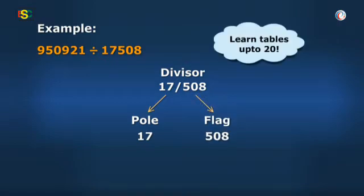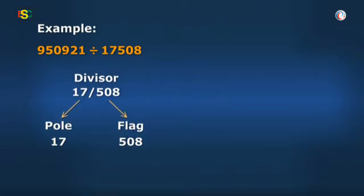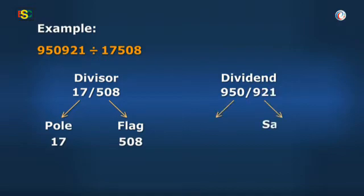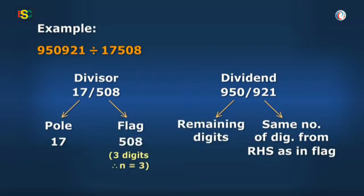Good. Never forget tables up to 20. Moving ahead, I will break dividend from right hand side as 950 slash 921. Keeping in mind that number of digits after slash will be same as number of digits in flag, which is 3. So, slash will come after 3 digits from right hand side.